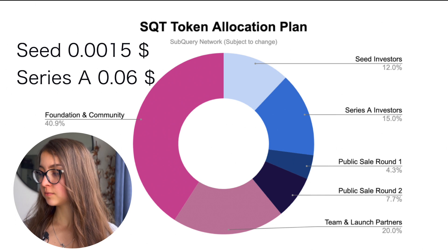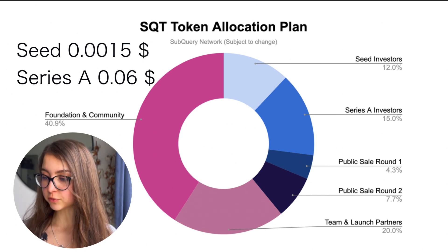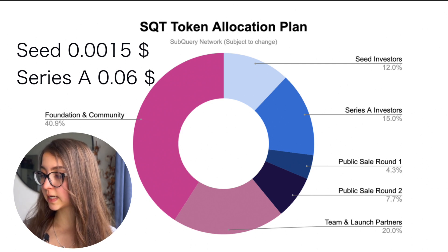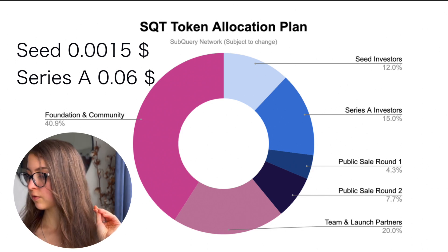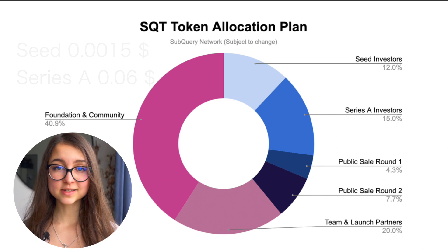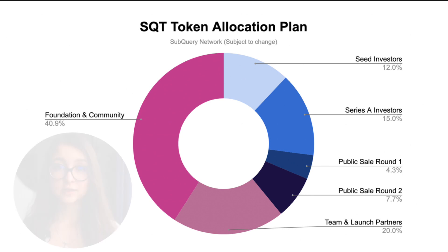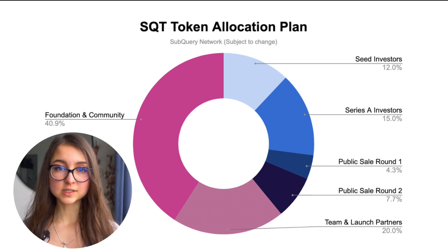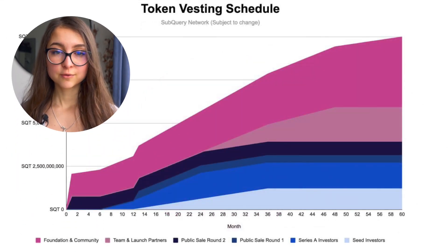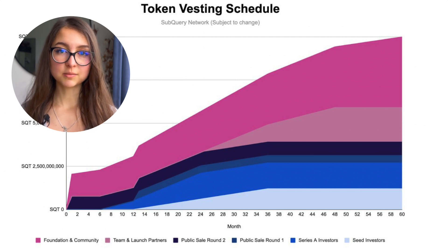In the seed round, investors paid $0.15 and are allocated 12% of the total token supply. Series A investors were allocated 15% of the total token supply, paying four times as much at $0.006. The biggest allocation, as we can see, is for foundation and community at 41%, needed for the ownership of SubQuery Network, as well as for marketing, growth, incentives, grants, and related activities. 30% is going to be unlocked for initial needs, and the total amount will enter the market over a period of five years.